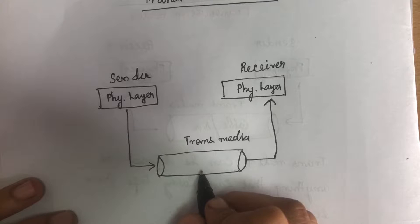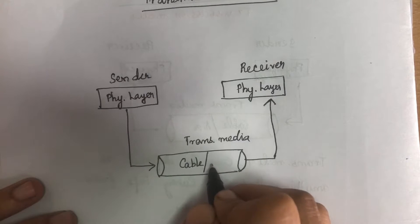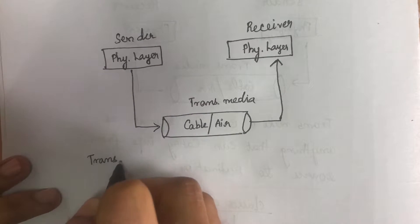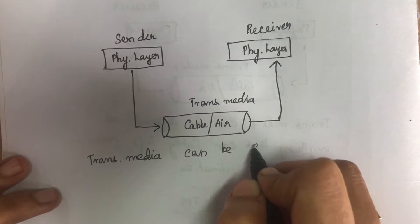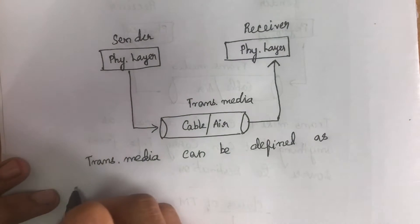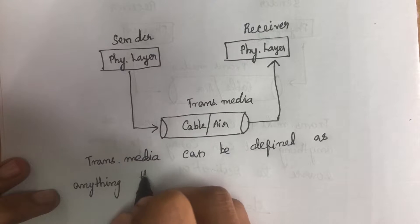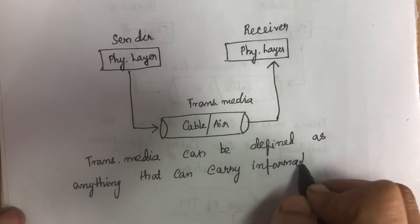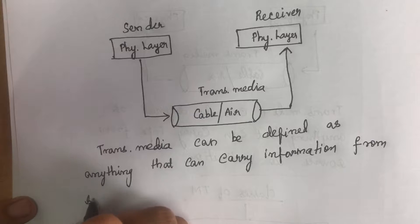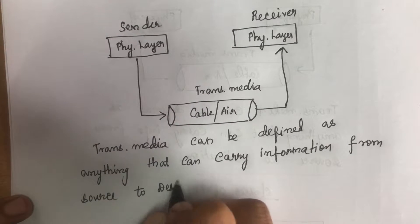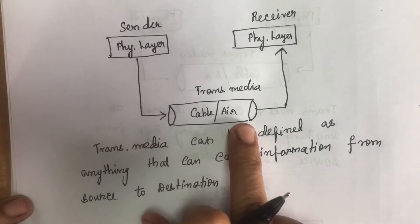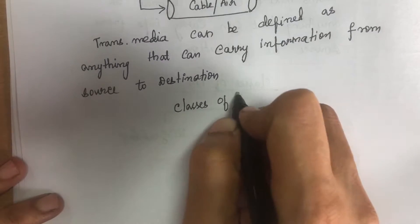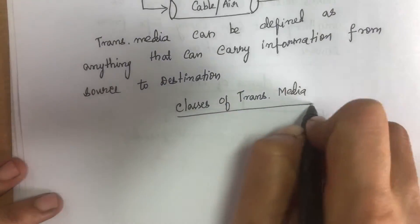Transmission media can be wired or wireless. If it is a wired one, we will be using a cable, and if it is a wireless one, we will be transmitting through air. Transmission media can be defined as anything that can carry information from source to destination.